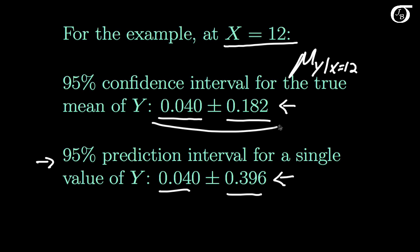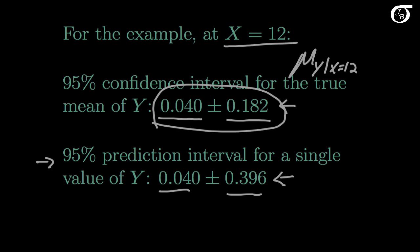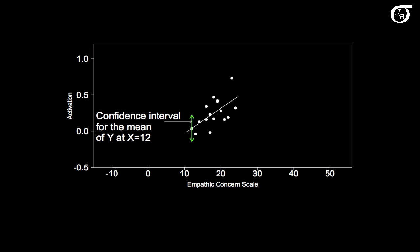Let's look at the confidence interval for the mean of y when x equals 12 visually. Returning to our example, the green arrow represents the confidence interval for the mean of y when x equals 12. We could calculate a confidence interval for the mean of y at a different point — we might be interested at a different x value. I've gone ahead and done that for different values of x and plotted it out.